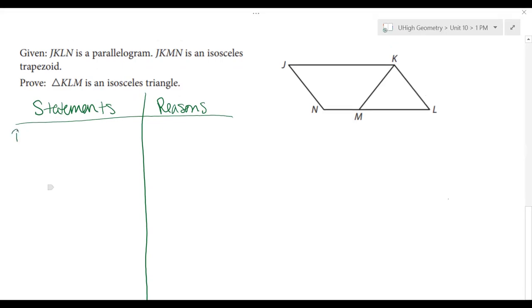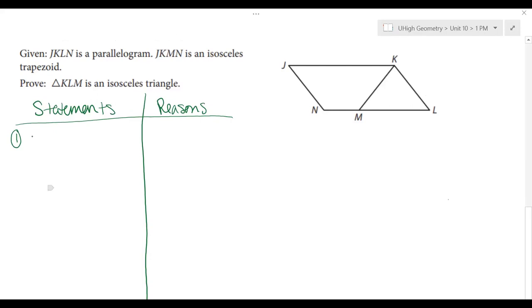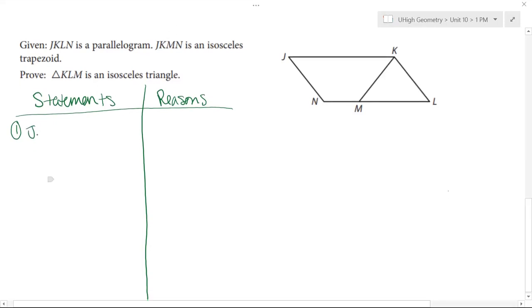So remember, the very first thing is our very first statement is going to be our givens. So I'm going to write that statement one, JKLN is a parallelogram, and JKMN is an isosceles trapezoid.